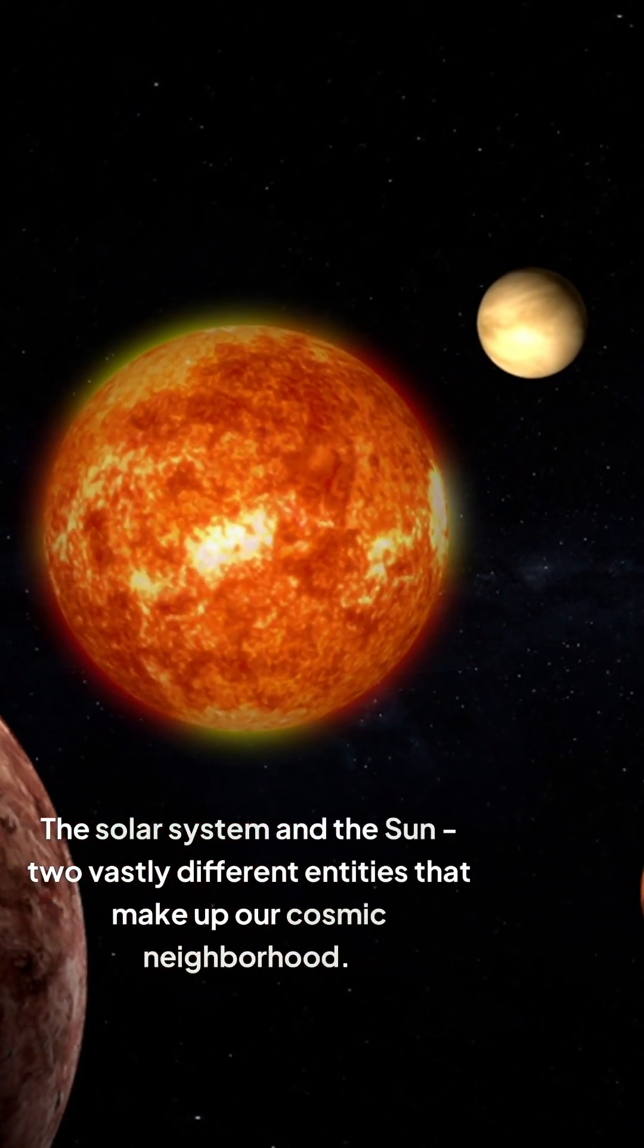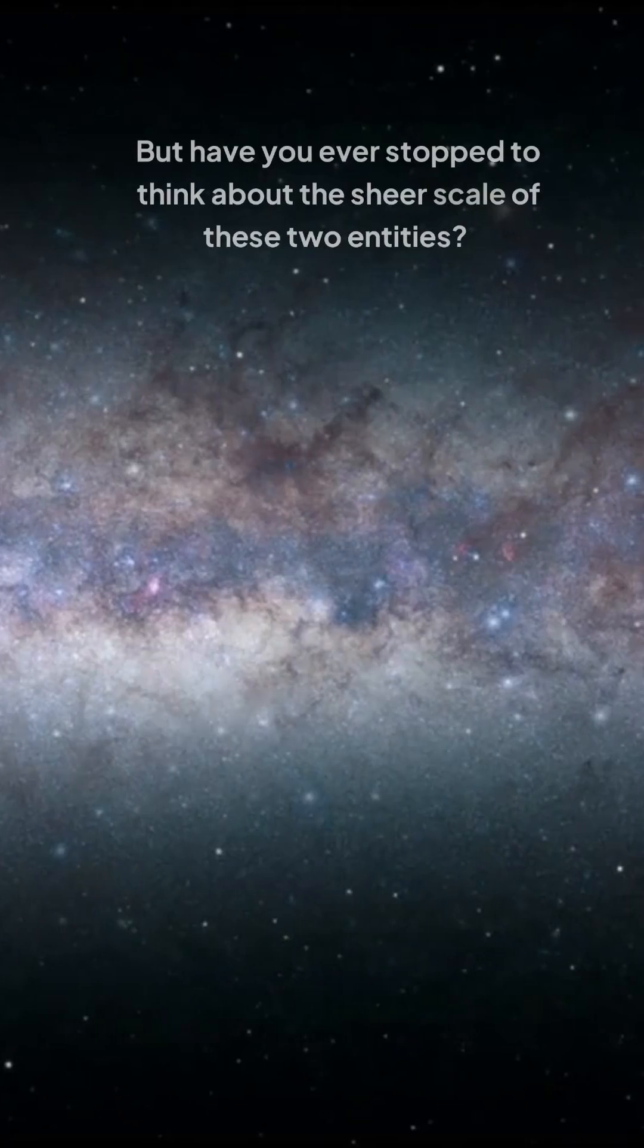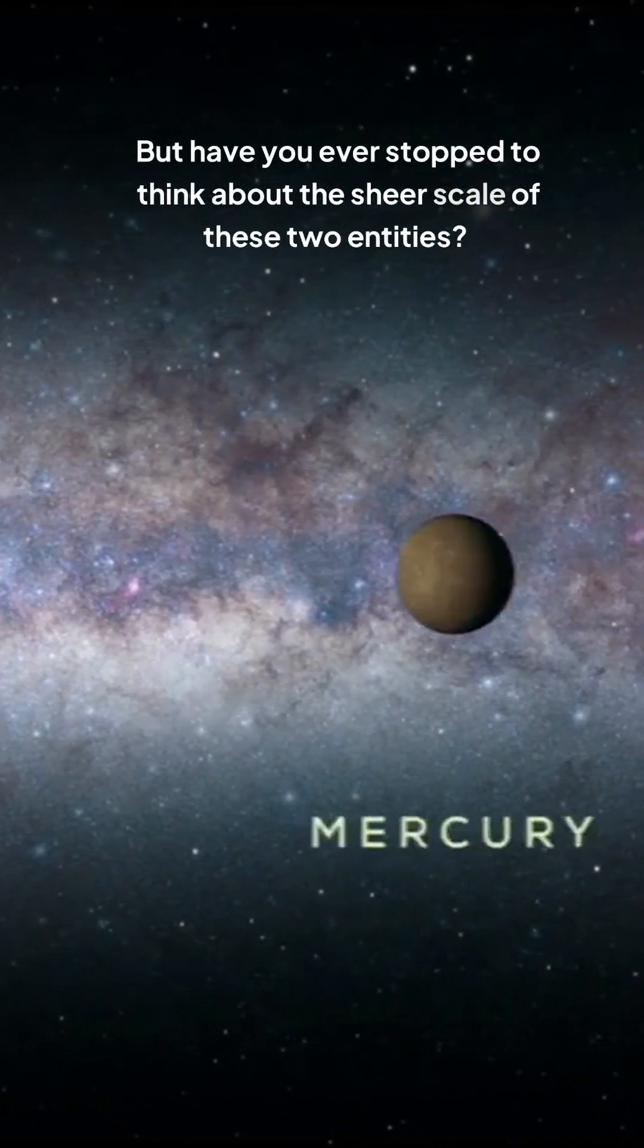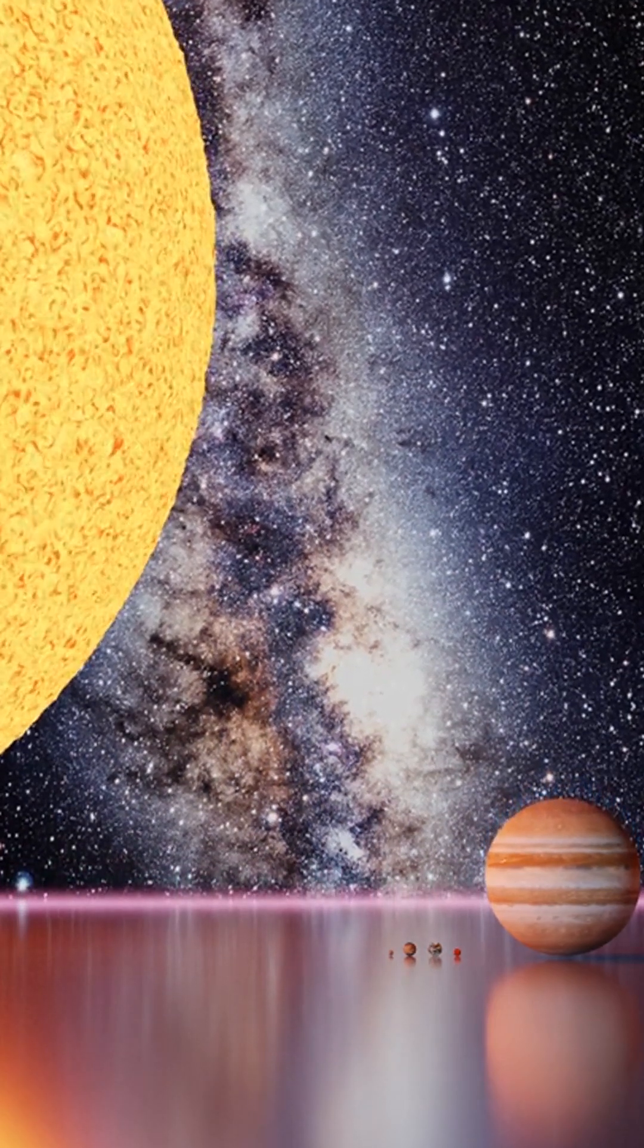The solar system and the sun, two vastly different entities that make up our cosmic neighborhood. But have you ever stopped to think about the sheer scale of these two entities? The sun is massive, a giant ball of hot glowing gas,